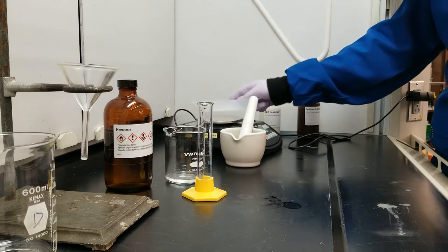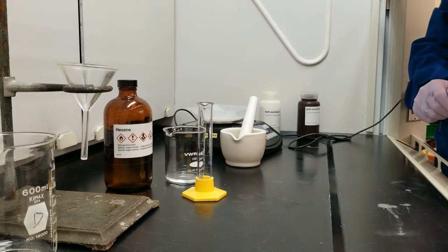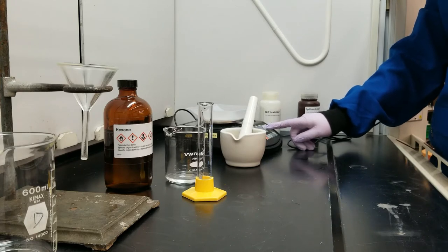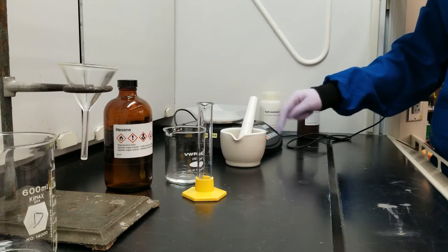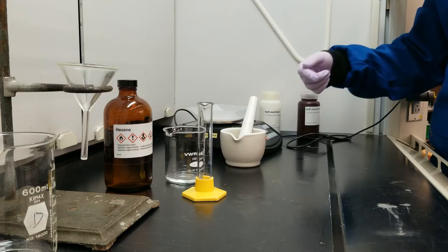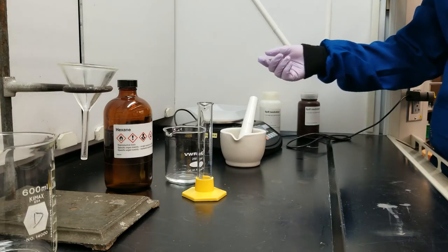So the first thing I'm going to do is weigh out my weigh boat. I'm going to record all the digits that come up on my balance, even if that last digit's a zero. It's still important to establish the precision of my experiment. I'm going to record this value on my data table under mass of 125 milliliter Erlenmeyer flask. They're calling them Erlenmeyer flasks, but we're using weigh boats.